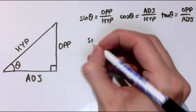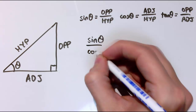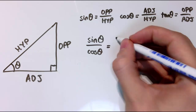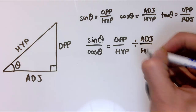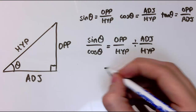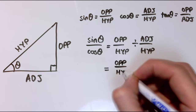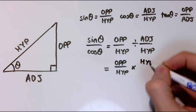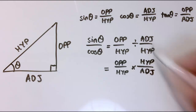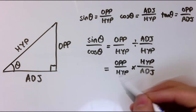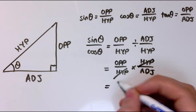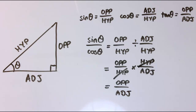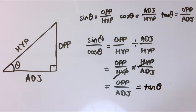The first one: look at what happens when I do sine theta divided by cos theta. That's the opposite divided by the hypotenuse, divided by the adjacent divided by the hypotenuse. When you divide by a fraction you turn it upside down and multiply, so I get the opposite over the hypotenuse multiplied by the hypotenuse over the adjacent. The hypotenuses cancel, giving the opposite divided by the adjacent.